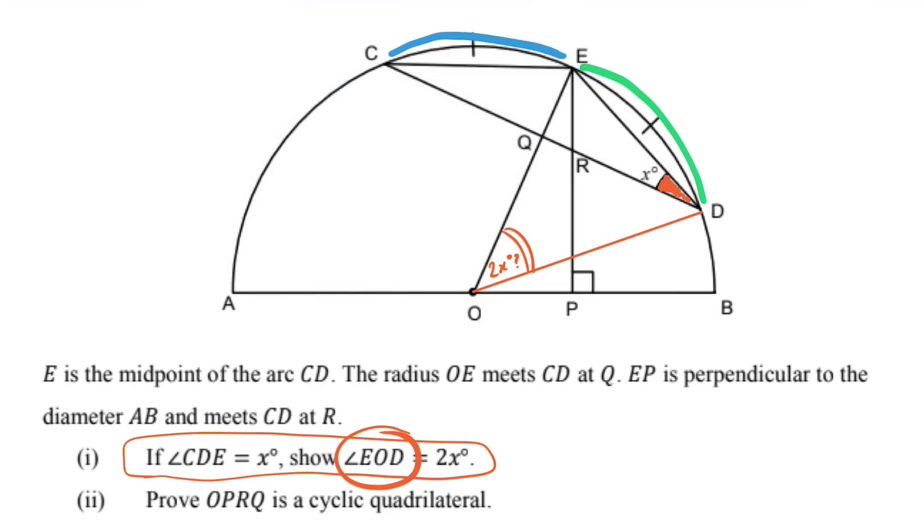Now, this is the moment where I notice, oh, the question said something which is useful to this. E is the midpoint of the arc CD, and that's why you can see these equality lines over here. So, they may stand on different arcs, but those arcs are the same in length. So I'm going to take advantage of that fact in a second.